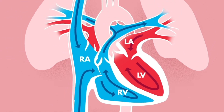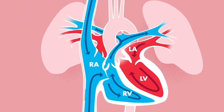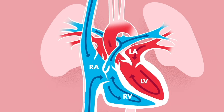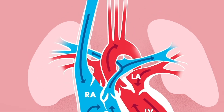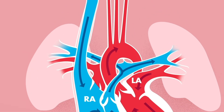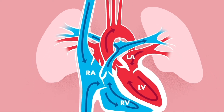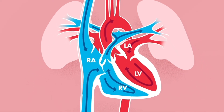The left ventricle then pushes the blood across the aortic valve into a large blood vessel called the aorta. The aorta splits into several branches to supply blood to the entire body.